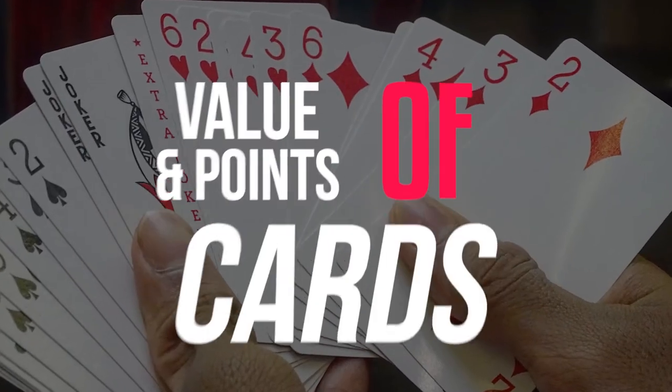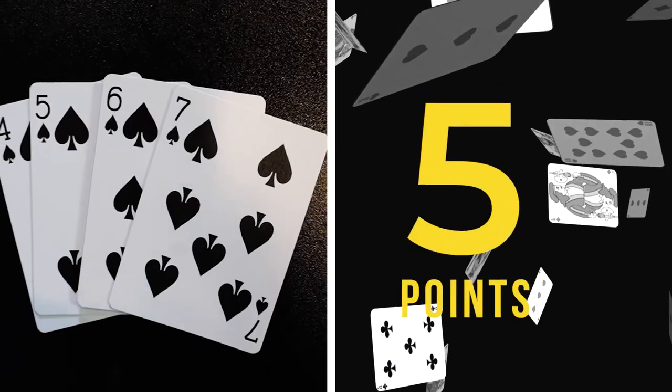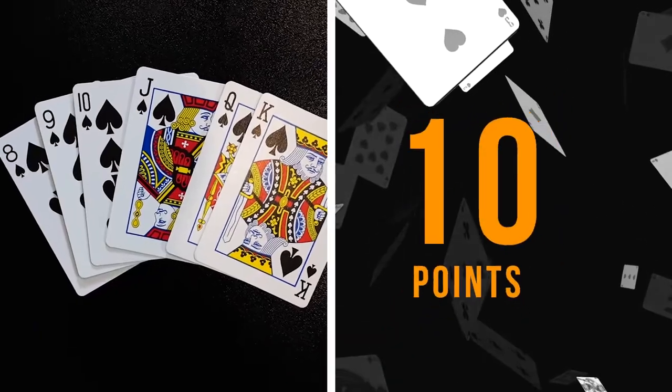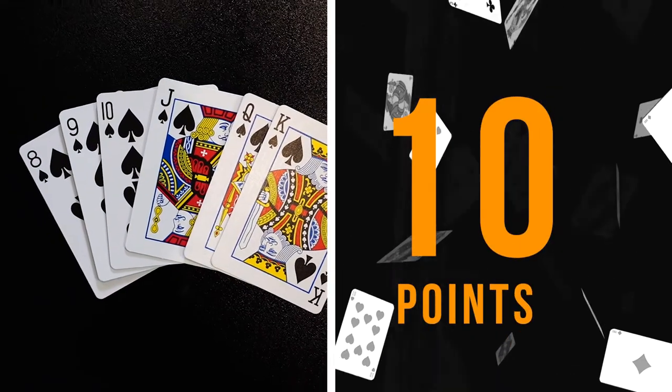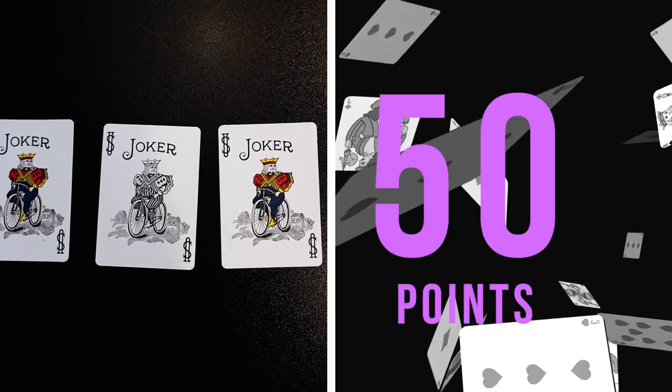Let's go over the value of each card. Black threes are worth five points. Four through sevens are worth five points each. Eight through king are worth ten points each. Twos and aces are worth 20 points. Jokers are worth 50 points.